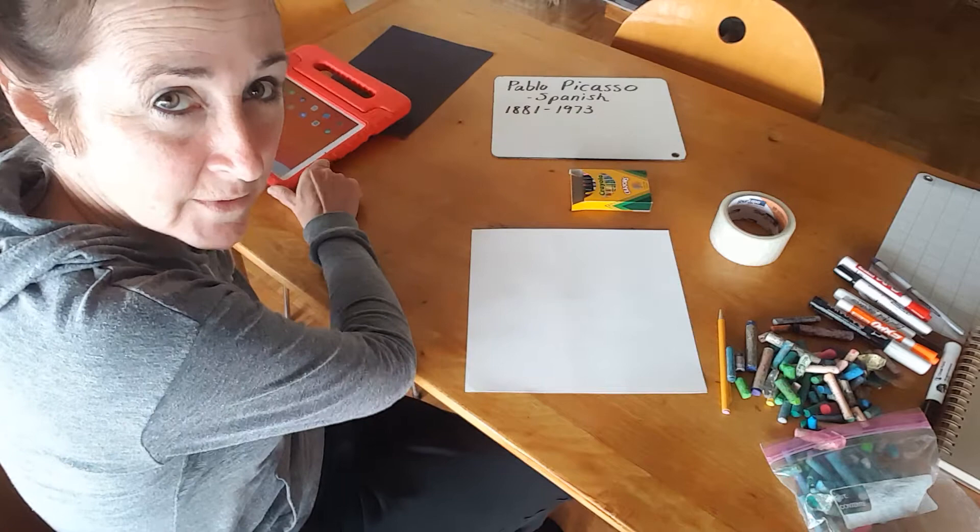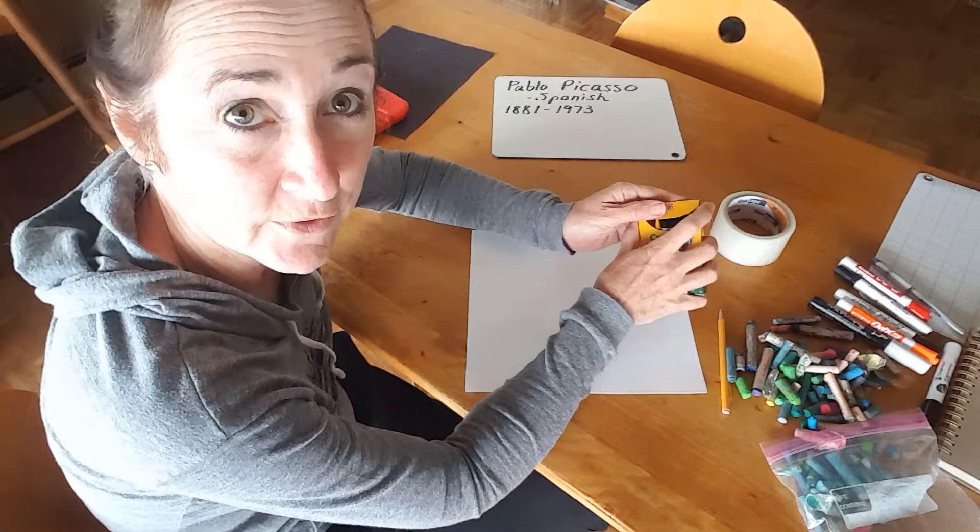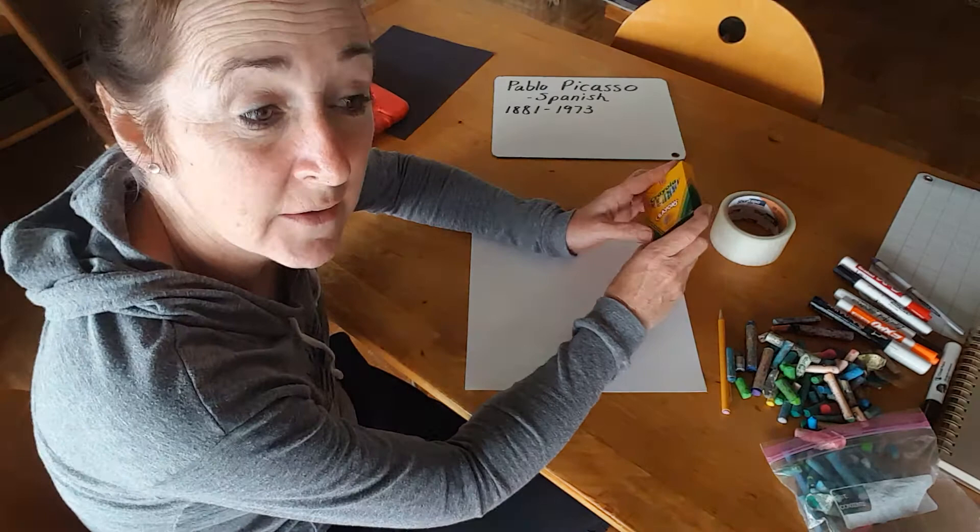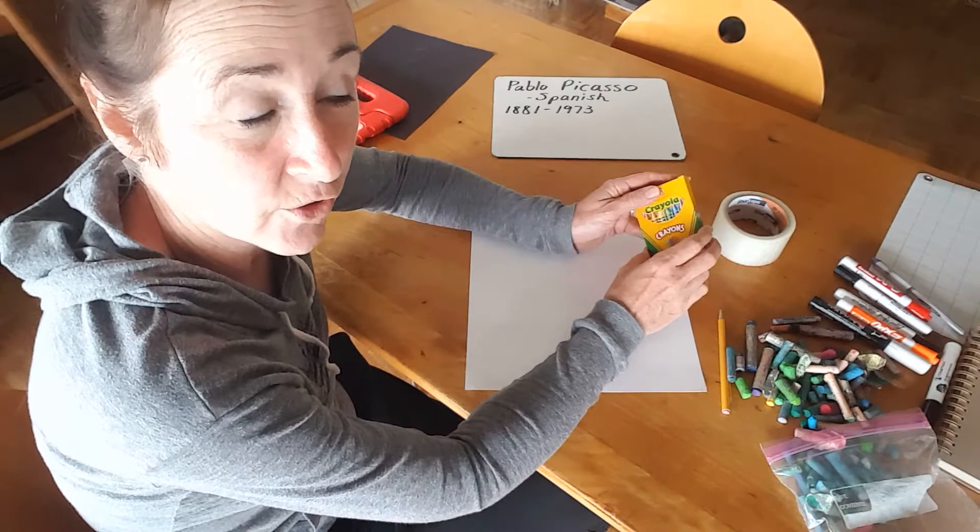He also went through a time period where he painted everything in blues — all different colors of grays and blues and blacks — because it was really sad. He went through a really sad period of time, and it's called his Blue Period, and everything he did was in blues.